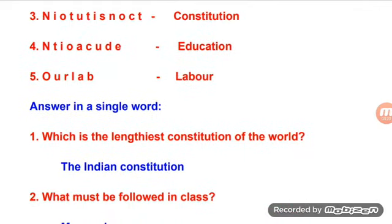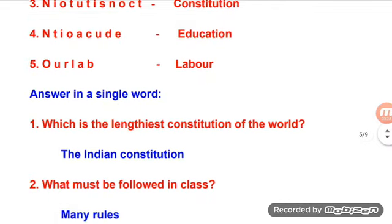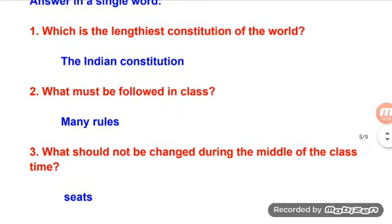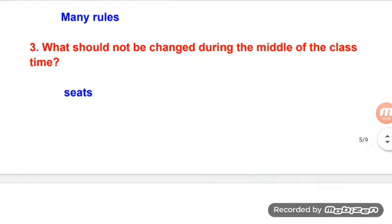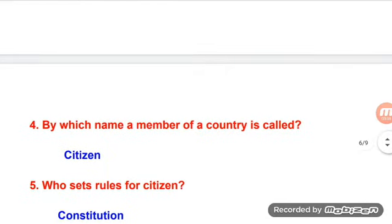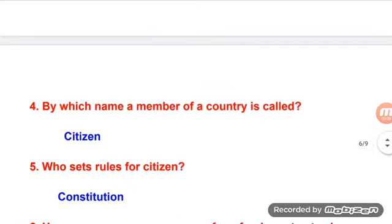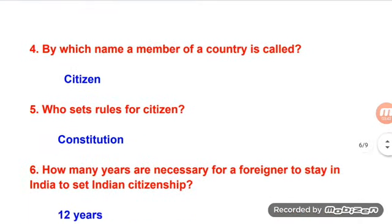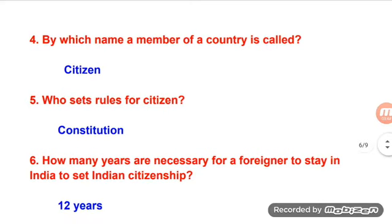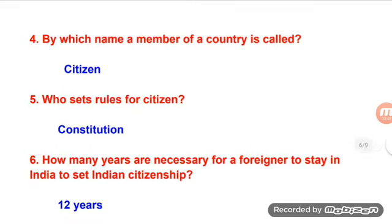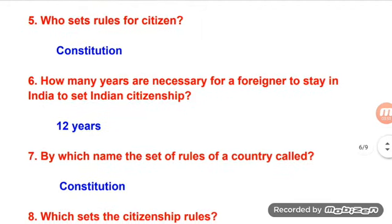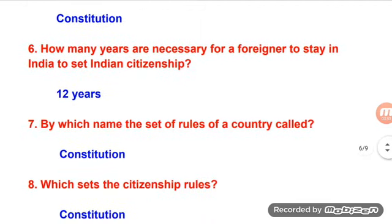Answer in a single word: Which is the lengthiest constitution of the world? — The Indian Constitution. What must be followed in class? — Many rules. What should not be changed during the middle of the class? — Seats. By which name is a member of a country called? — Citizen. Who sets rules for citizens? — Constitution. How many years are necessary for a foreigner to stay in India to get Indian citizenship? — 12 years.